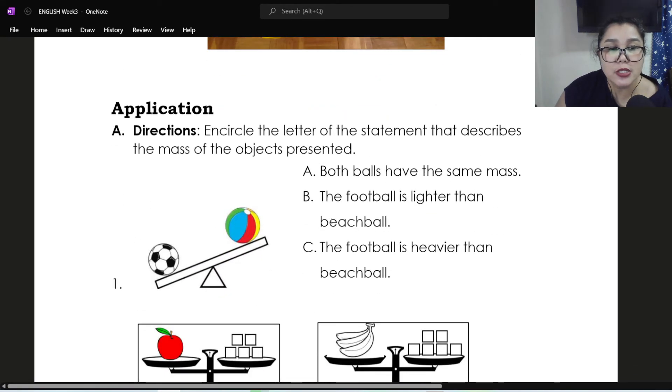Application. Directions: encircle the letter of the statement that describes the mass of the objects presented. So you have choices A, B, or C. Okay, number one figure, we have a soccer ball and a beach ball. So which statement is true? A, both balls have the same mass. B, the football is lighter than the beach ball. C, the football is heavier than the beach ball. So which statement describes the mass of these two objects.